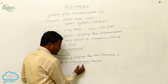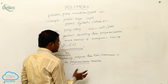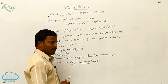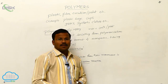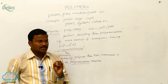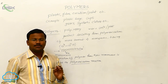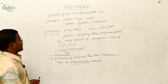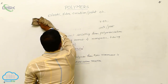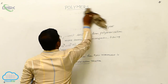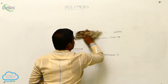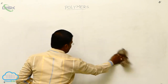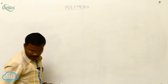The chemical reaction required to produce polymers is called a polymerization reaction. This is the introduction to polymers. Polymers are classified into different categories, and we can classify polymers based on different aspects.